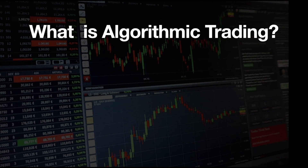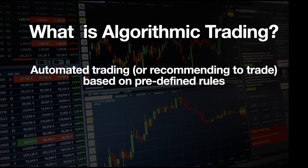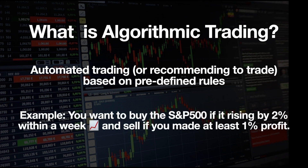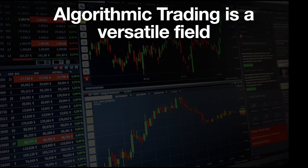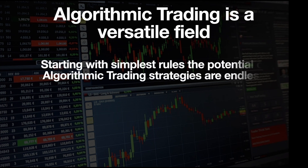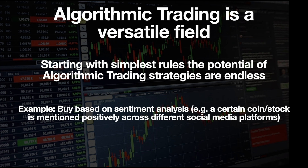So what is algorithmic trading? Pretty much straightforward — it is automated trading, or the recommendation to trade based on predefined rules. As an example, an algorithm which is buying the S&P 500 whenever it is rising by 2% within a week and selling if you made at least 1% profit. In general, algorithmic trading is a huge and versatile field. Starting at simple rules, it can end up with highly complex models — for example, you can apply sentiment analysis across different social media platforms and let an algorithm trade a coin or stock based on the sentiment.